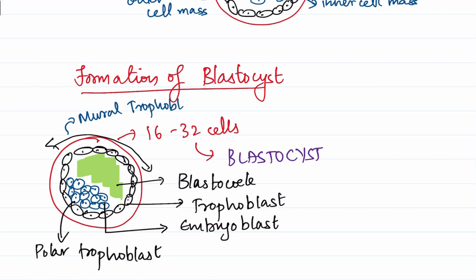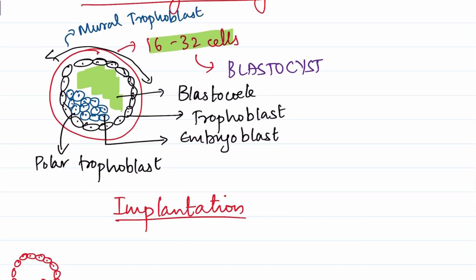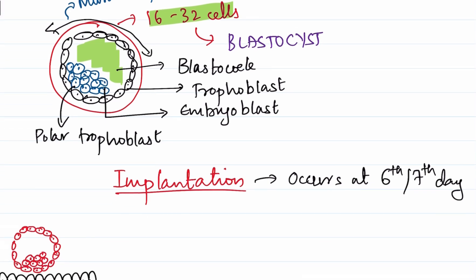It is this blastocyst, containing 16 to 32 cells, which will undergo the final step — implantation. Implantation occurs at the 6th or 7th day after fertilization. By the end of implantation, the first week of life is completed.